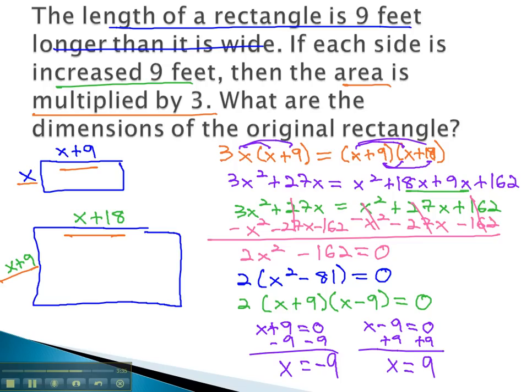Clearly, it wouldn't make sense to have a negative dimension on a rectangle. But x equals 9 would work for our original dimension. The other side, x plus 9, or 9 plus 9 is 18.